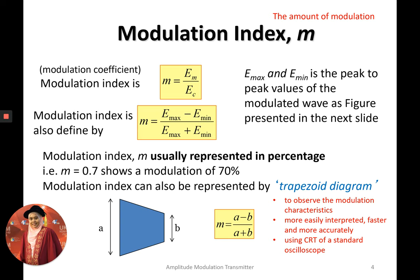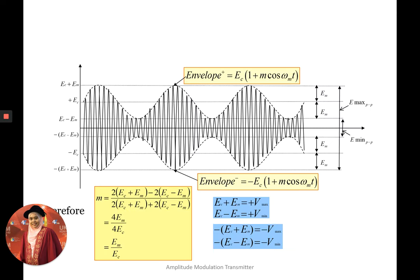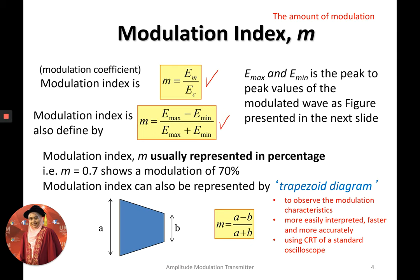For modulation index, as I explained in my previous video, you can get the value by taking the amplitude of the modulating signal divided by the amplitude of the carrier signal. Another way to get the modulation index is by getting information from the envelope. This is the envelope of the AM signal. You can get the modulation index if you know the maximum and minimum amplitude values, and substitute them into the equation.